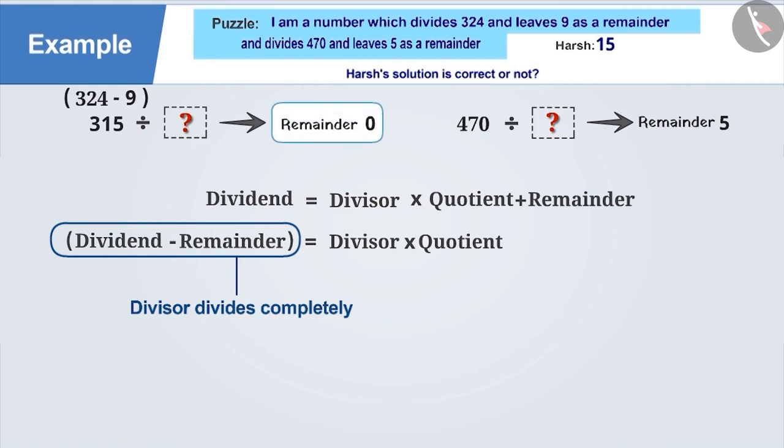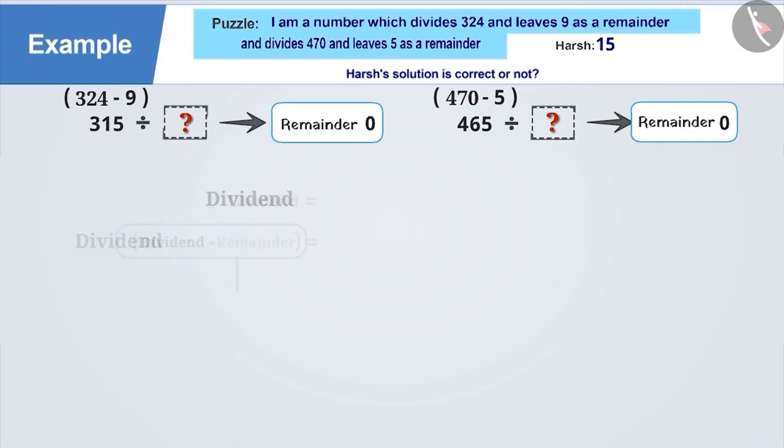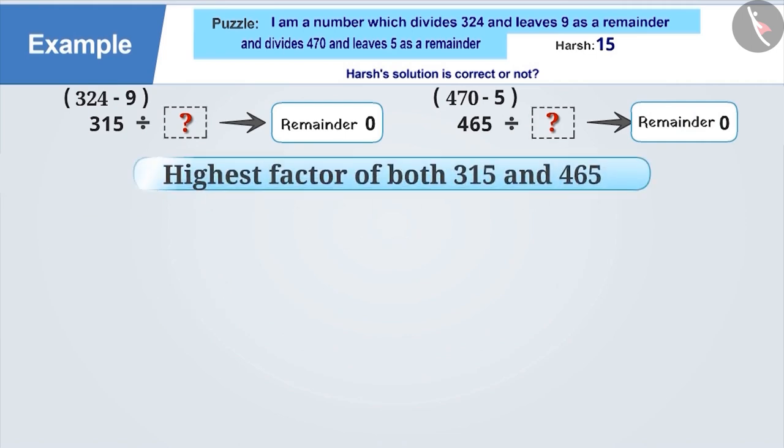Similarly, by subtracting 5 from the number 470, the number obtained will be completely divisible by the required number. That means, the required number will be the highest factor of both 315 and 465, which we call HCF.